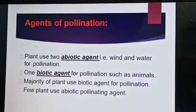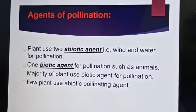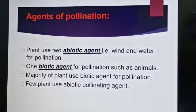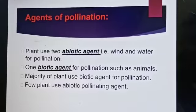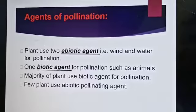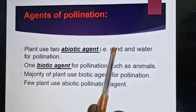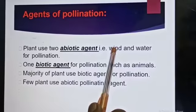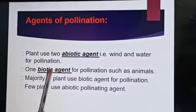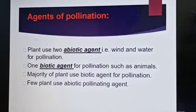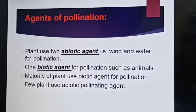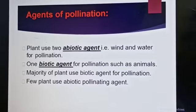Abiotic agents are non-living agents, like wind and water. This means the transfer of pollen from anthers to stigma takes place with the help of wind or water. Biotic agents — bio means living — means pollination takes place with the help of living organisms such as insects and animals.